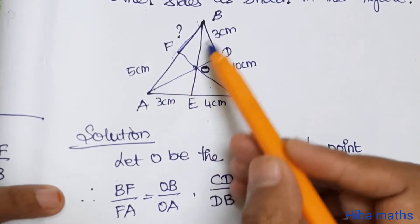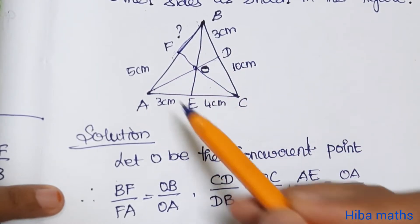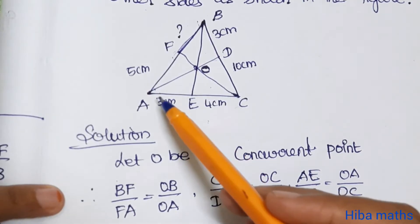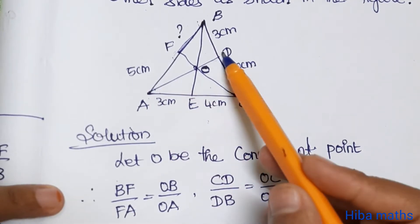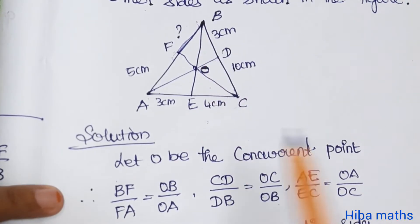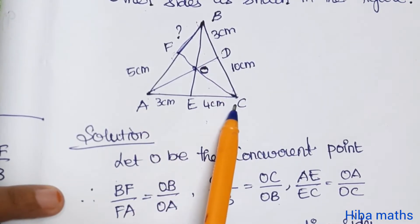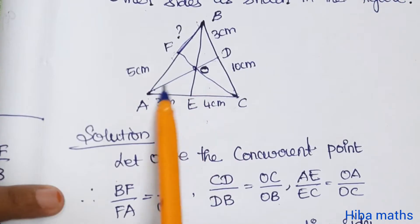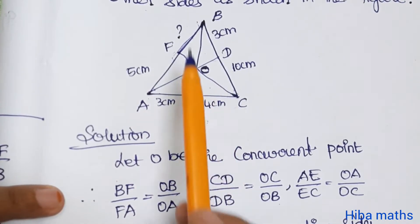The concurrent point gives us: BF by FA is equal to OB by OA. CD by DB is equal to OC by OB. AE by EC is equal to OA by OC.